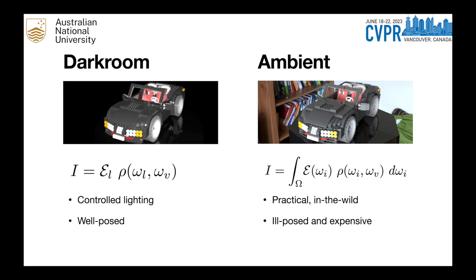Existing inverse rendering methods can be divided into two categories: those limited to a darkroom environment, and those able to work under ambient lights. Darkroom methods use a single and controlled light source, in which case the reconstruction problem is well posed. By contrast, ambient reflection involves solving an expansive integral over all lighting directions, in which case the reconstruction problem can become ill-posed and intractable.